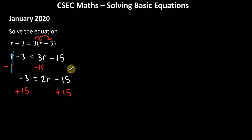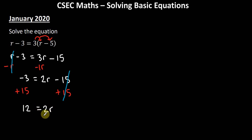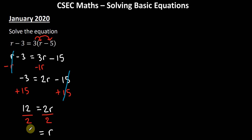Minus 15 plus 15 is 0, so we're left with minus 3 plus 15, which is 12, equals 2r. Now we divide both sides by 2: 2 into 2 goes once, leaving r, and 2 into 12 goes 6 times. Therefore r equals 6. That is our answer.